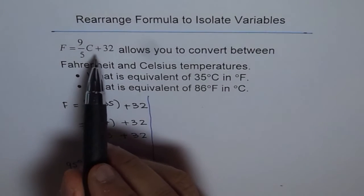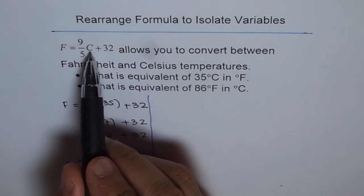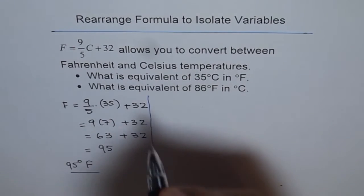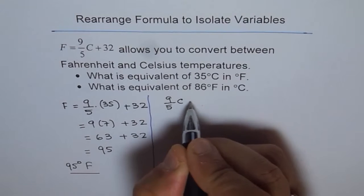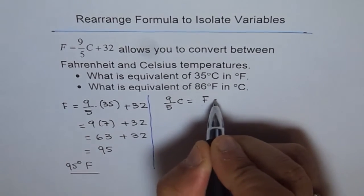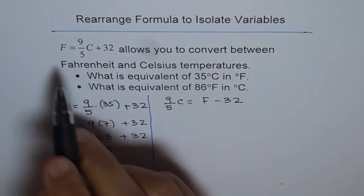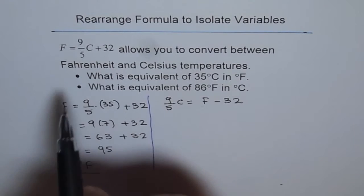So first thing what we will do is, to find C, we will take away 32. So we can write, 9 over 5C, is equal to F minus 32. So we will take 32 out, away from the right side.